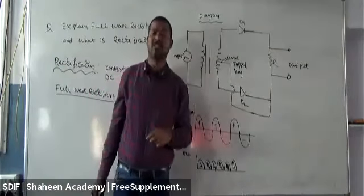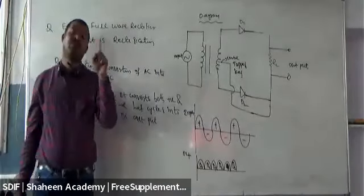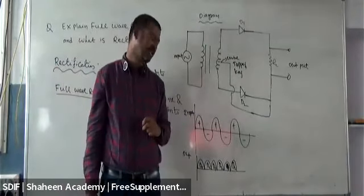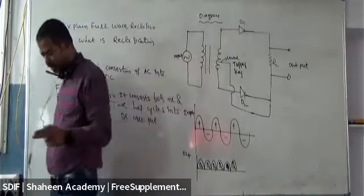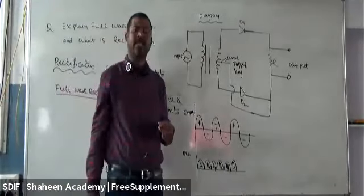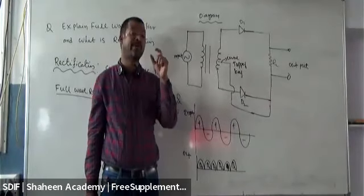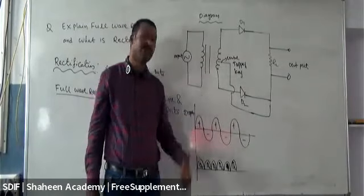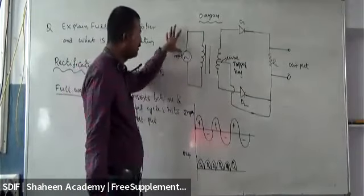Regarding efficiency: because of two diodes, each diode provides efficiency of 40.6%. Both cycles are converting into positive output, so together the full wave rectifier efficiency is 40.6 + 40.6 = 81.2%. This 81.2% is the efficiency of the full wave rectifier.